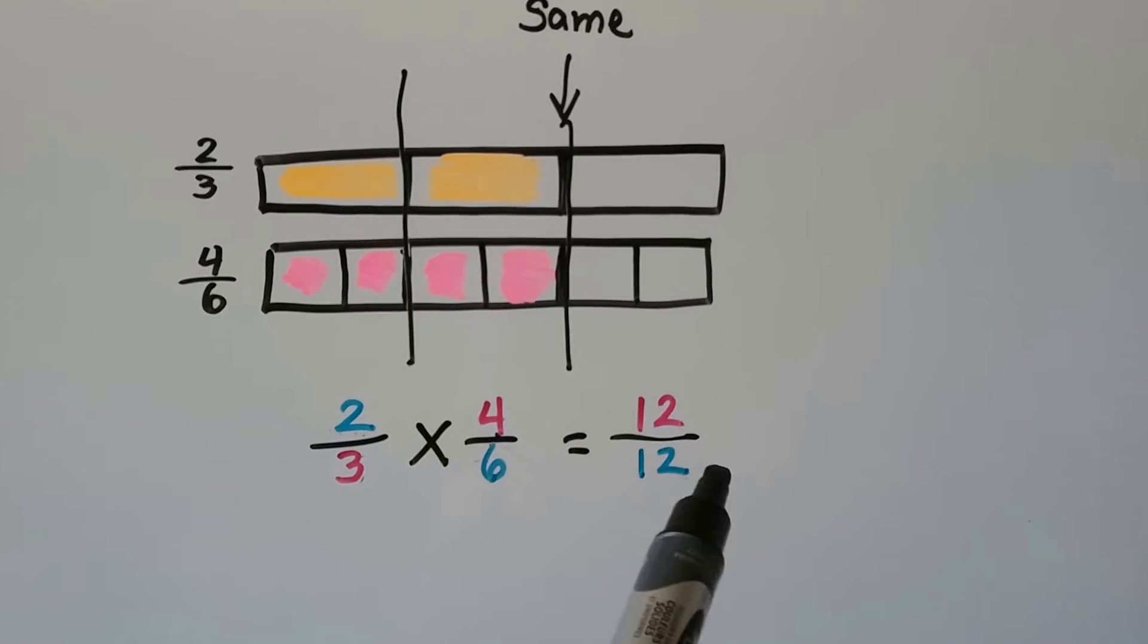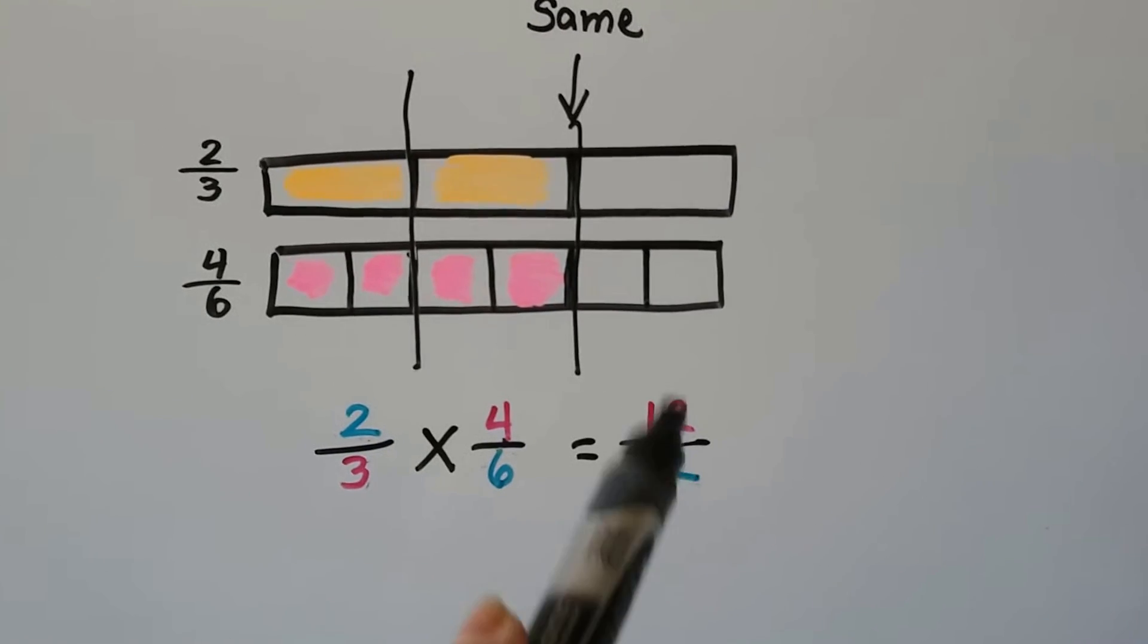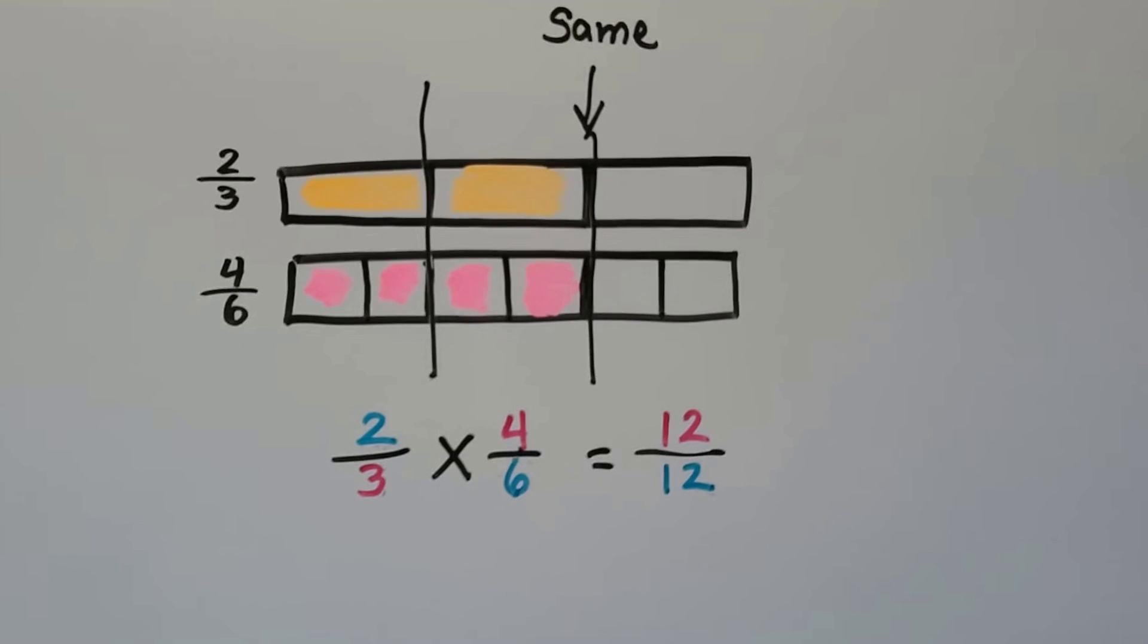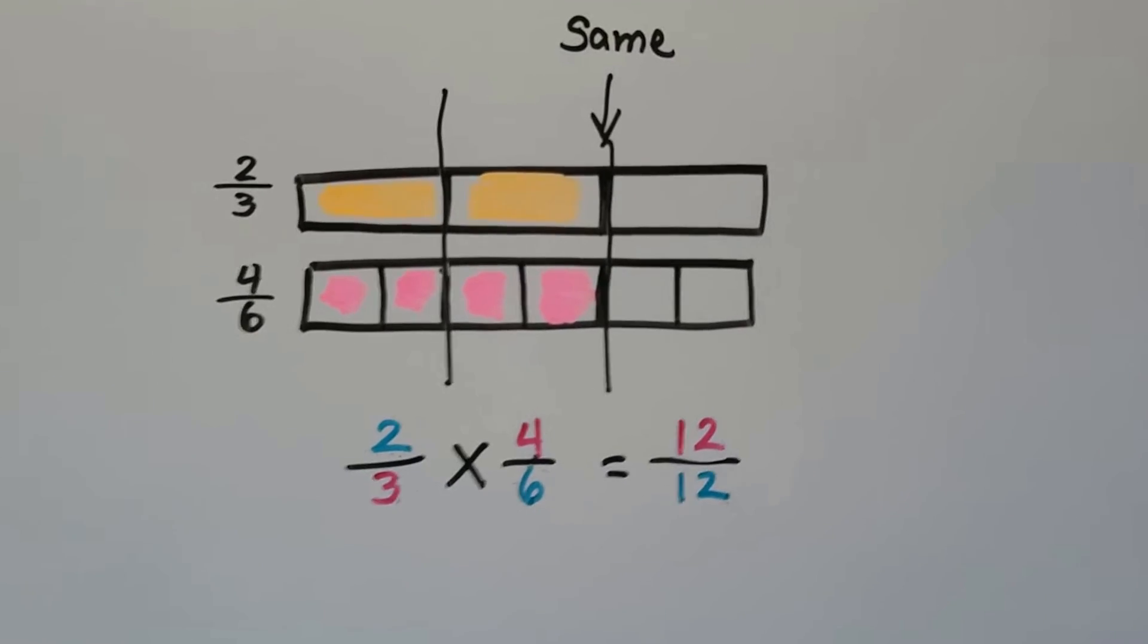We do the cross products. Two times six is twelve and three times four is twelve. Same product. They're equivalent. Two-thirds and four-sixths are equivalent.